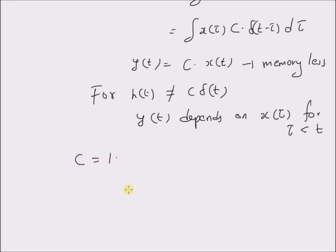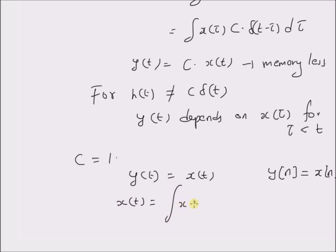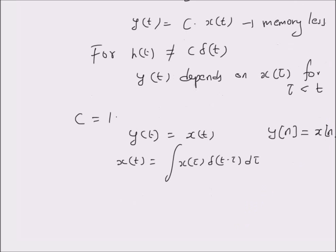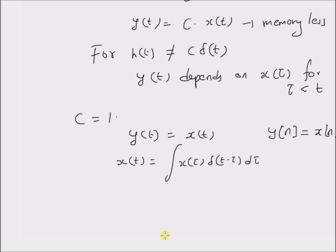Finally, for the constant c equal to 1, the output y of t is equal to x of t for continuous systems, and for discrete systems the output y of n is equal to x of n. That means they are identity systems, and the system equations are basically shifting properties: x of t is equal to the integral of x of tau times delta of t minus tau d tau. This is a similar property for discrete systems as well. Thus, linear time invariant systems have no memory if their impulse response h of t or h of n is equal to a constant multiplied by the impulse signal. Thanks for watching.